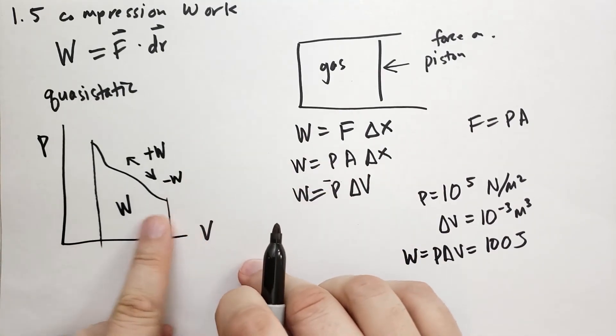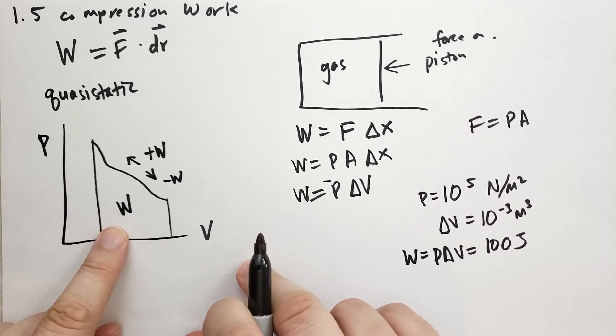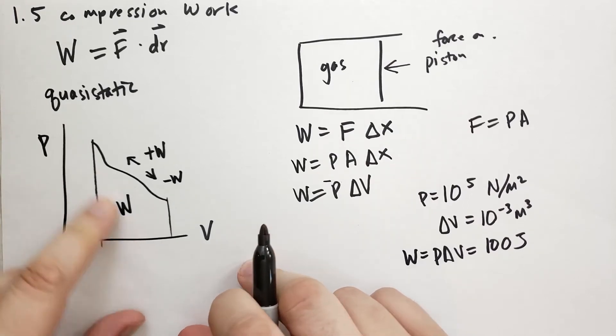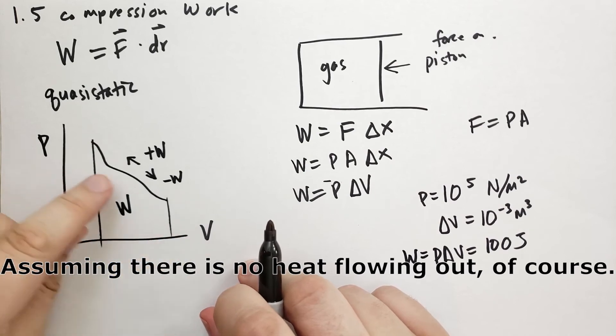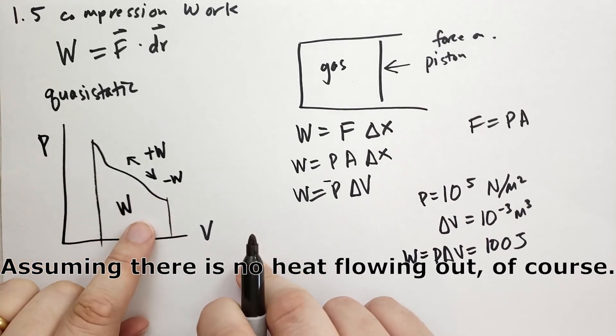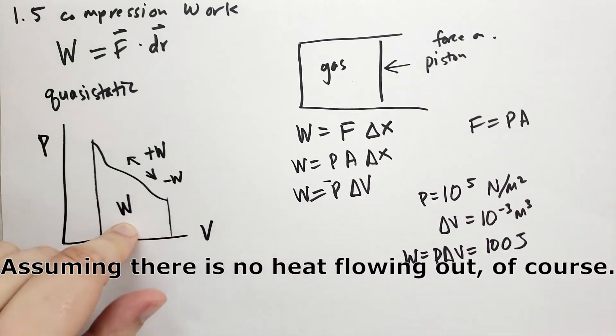So when you're going this direction on the graph, you're doing work on the gas. The gas is increasing in internal energy. And when you're going this direction on the graph, there's work being done on the environment around it. And so there's energy leaving the system through work.